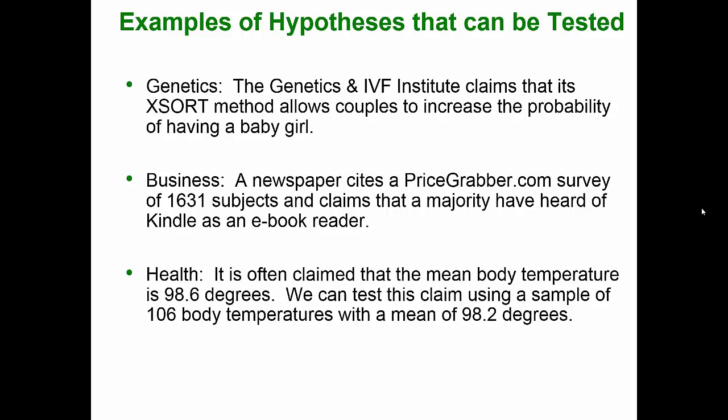Here are some examples of hypotheses that can be tested. Genetics: The Genetics and IVF Institute claims that its XSORT method allows couples to increase the probability of having a baby girl. Business: A newspaper cites a pricegrabber.com survey of 1,631 subjects and claims that a majority have heard of the Kindle as an e-book reader. Health: It is often claimed that the mean body temperature is 98.6 degrees. We can test this claim using a sample of 106 temperatures with a mean of 98.2 degrees.